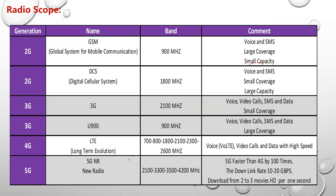After 4G came down — called LTE, which stands for Long-Term Evolution — it came with many bands: 700, 800, 1,800, 2,100, 2,300, and 2,600 MHz. All of these are bands used in 4G, and a site can have two bands as well. We will understand the bands and their functions later on. 4G gave the services of voice over LTE, video calls, and high-speed data or internet. When I open YouTube with 4G, if the network is good, the video opens in just a second.